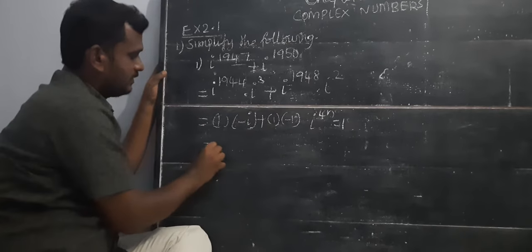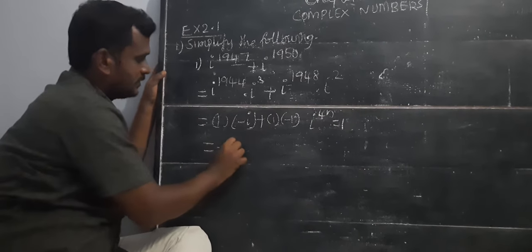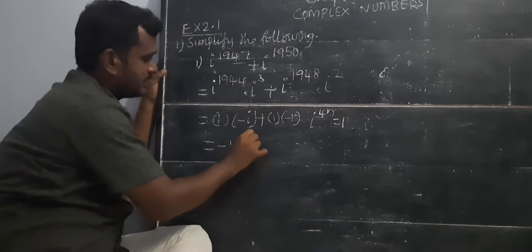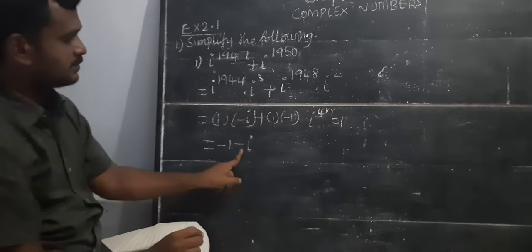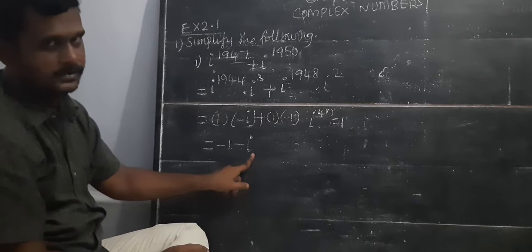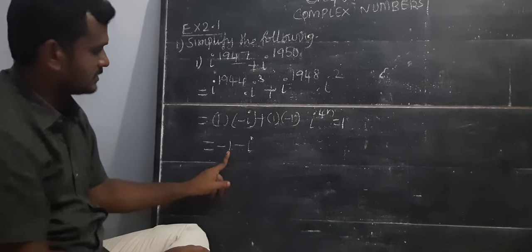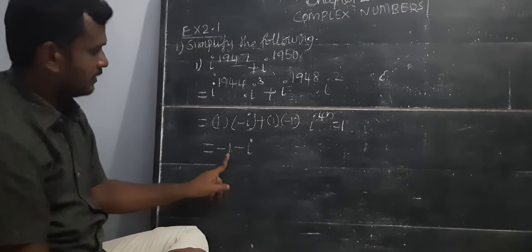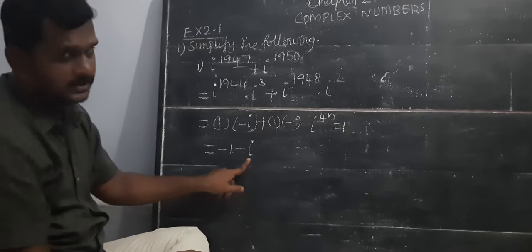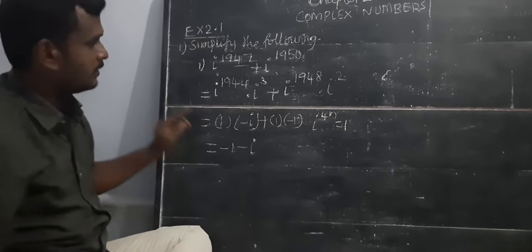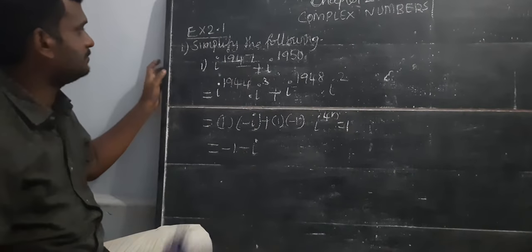Therefore the final value is minus 1 times minus i, which gives i. It is in the form of x plus iy. The real part is 0 and the imaginary part is 1. That completes the first sum.